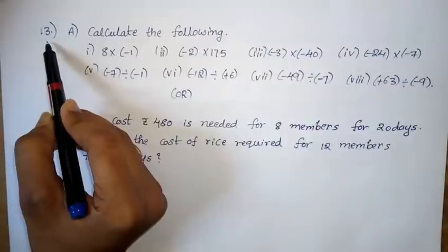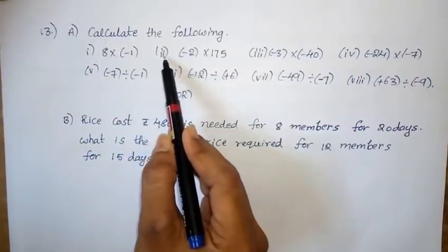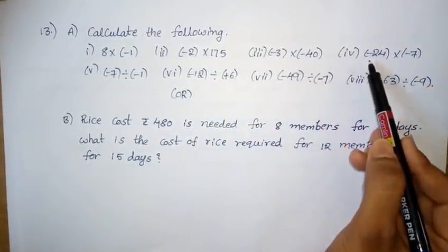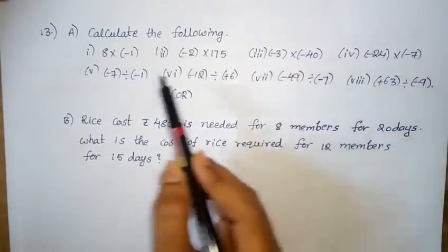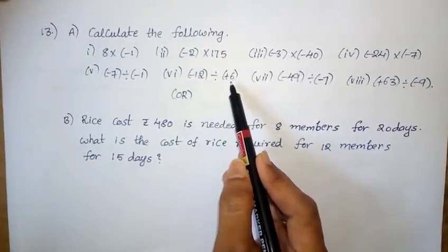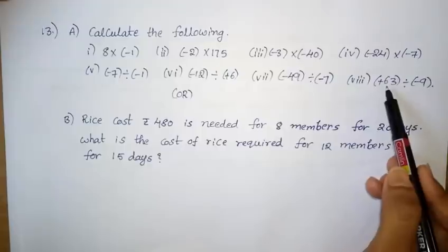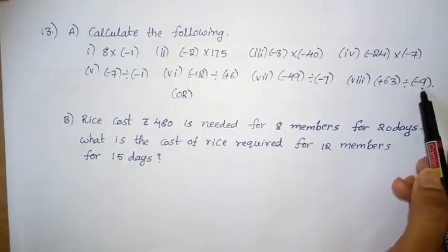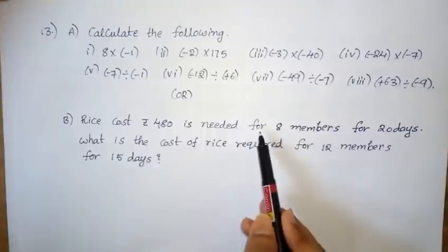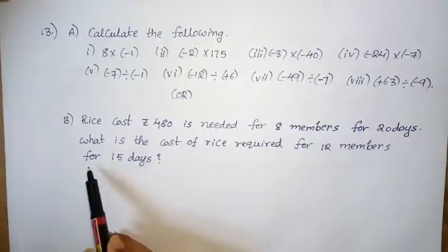Thirteenth question Part A: Calculate the following — 1st: 8 into minus 1; 2nd: minus 2 into minus 75; 3rd: minus 3 into minus 40; 4th: minus 24 into minus 7; 5th: minus 7 divided by minus 1; 6th: minus 12 divided by plus 6; 7th: minus 49 divided by minus 7; 8th: plus 63 divided by minus 9. Part B: Rice costing 480 rupees is needed for 8 members for 20 days. What is the cost of rice required for 12 members for 15 days?